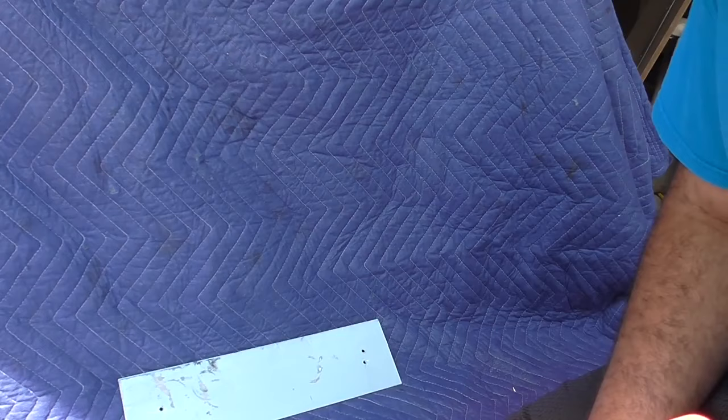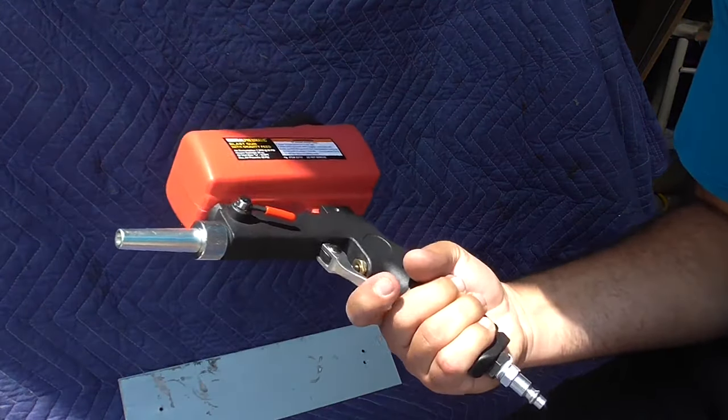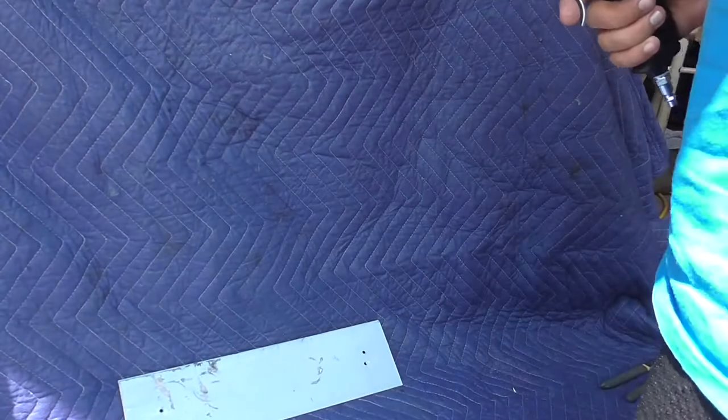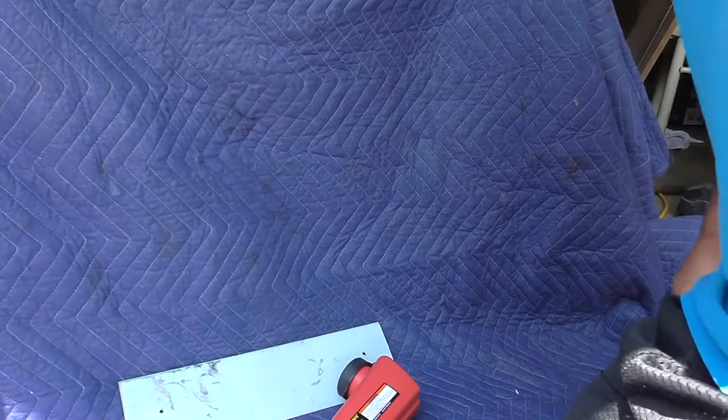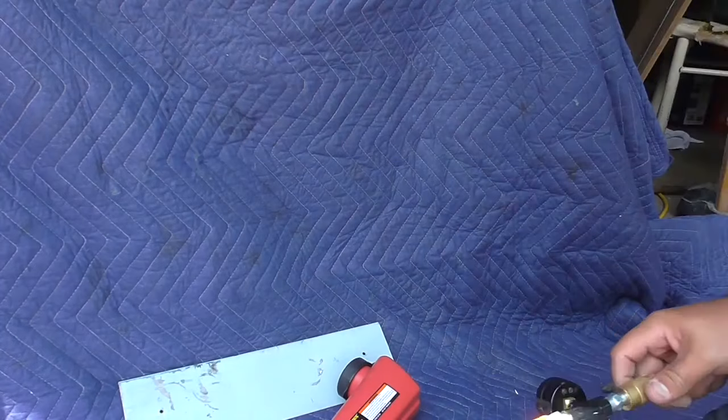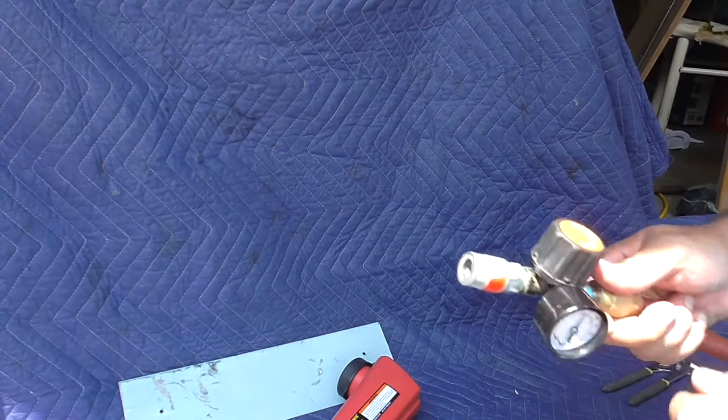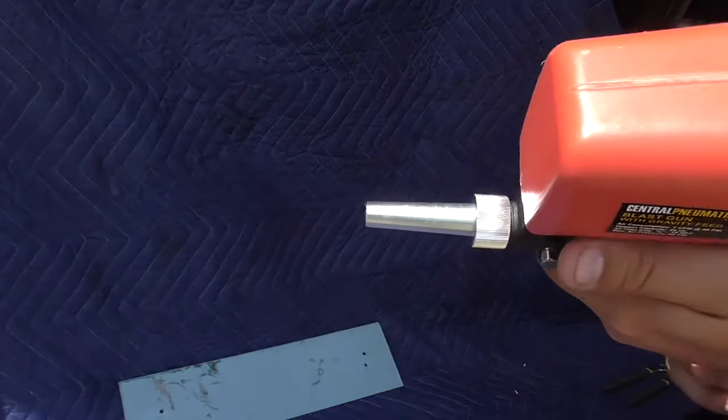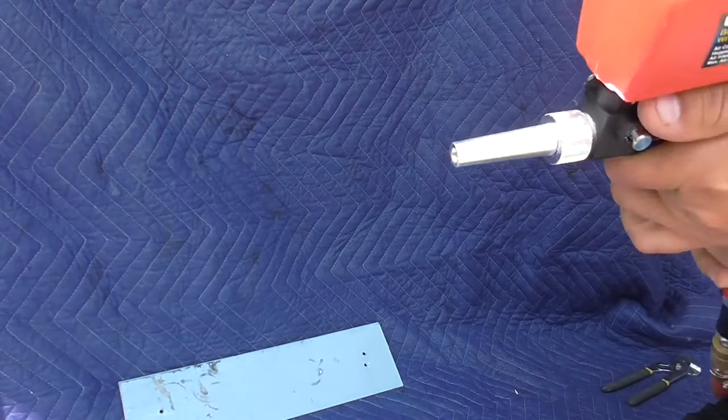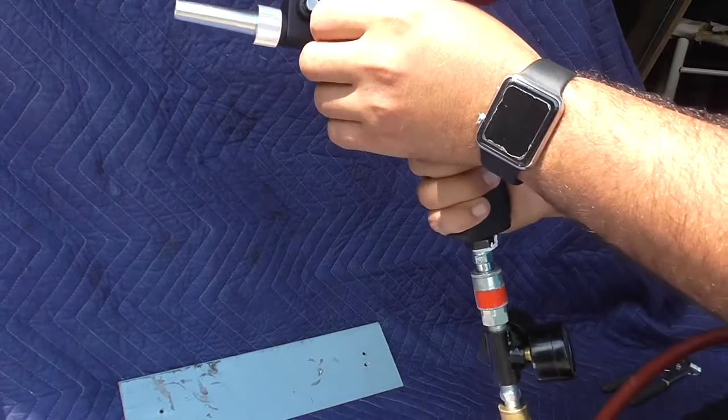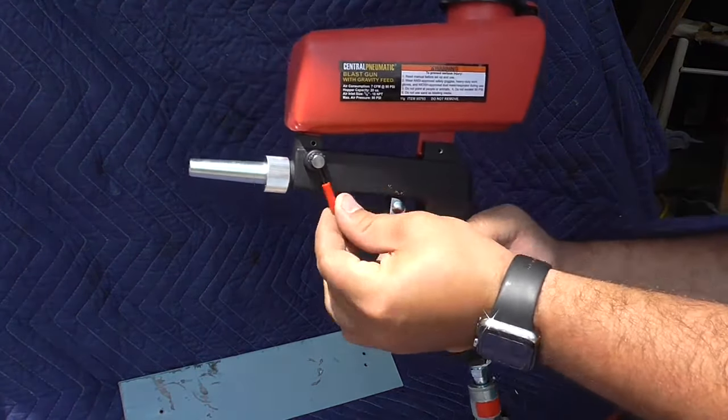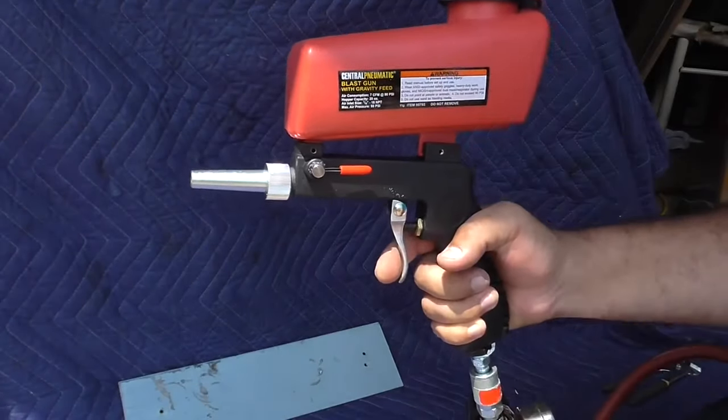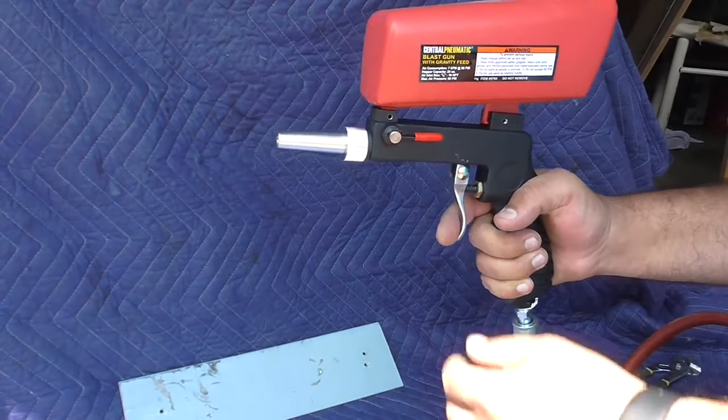So I'm going to fill it up now and see what it looks like, see what it does. It says recommended pressure is 90, so I set up my pressure gauge to about 90 running pressure. Here we got the lever to open and close the hopper. So we'll see.